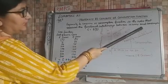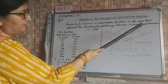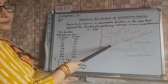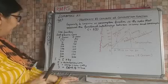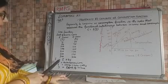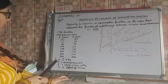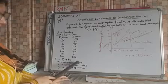And this is showing the saving part and this is called as the propensity to consume curve. And the function is symbolized in equation form as c equals c bar plus b y.